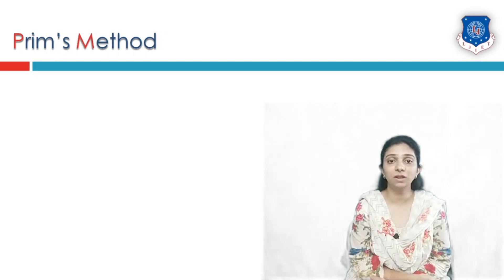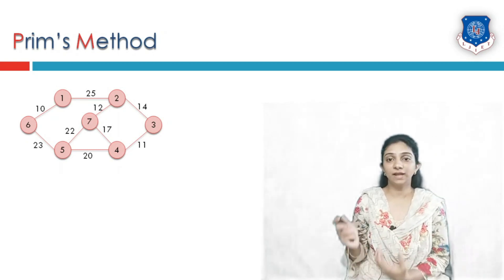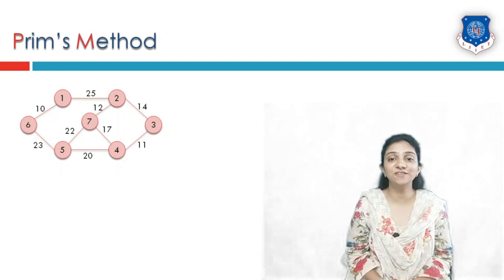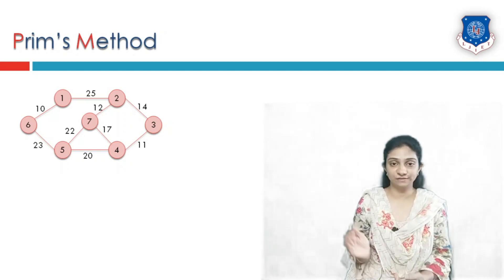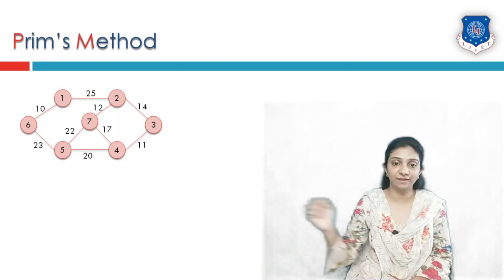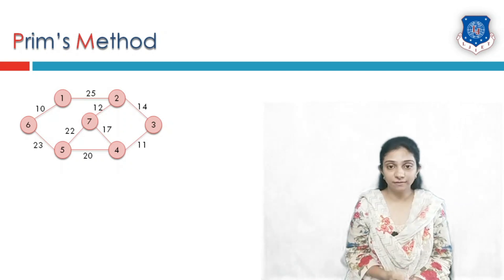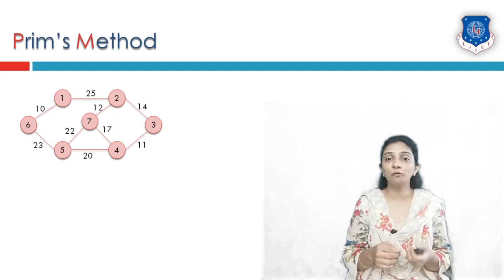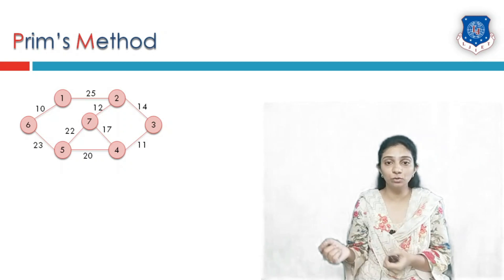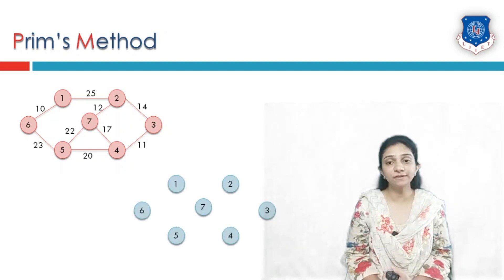Let us take one example and see how Prim's method works. A graph is given whose minimum spanning tree needs to be generated. The vertices are labeled 1, 2, 3, 4, 5, and 6, and the edges are labeled with weights. These edges are undirected, meaning moving from vertex 1 to 2 or from vertex 2 to 1 incurs the same cost — for example, 25.